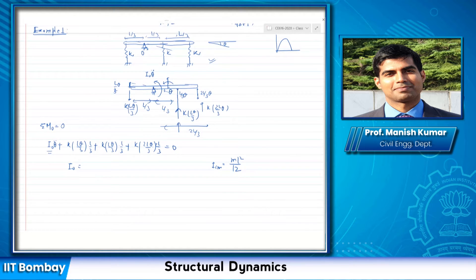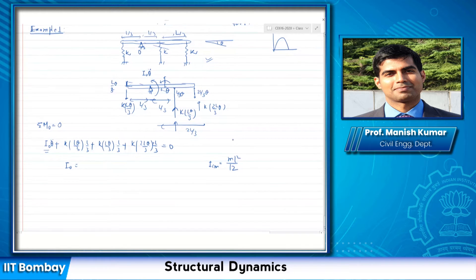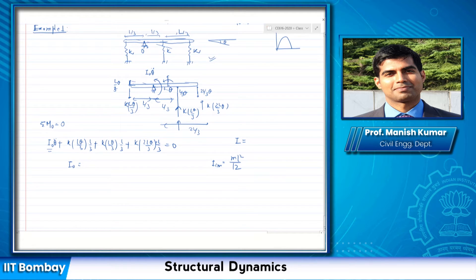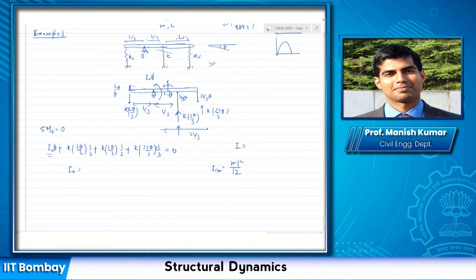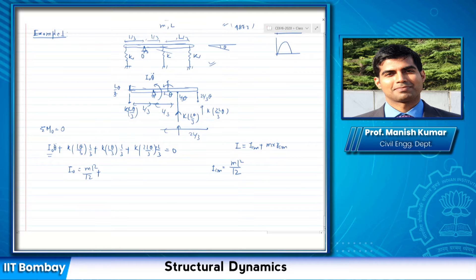Now I'm considering the moment of inertia about the point of rotation, so we use the parallel axis theorem. It states that the moment of inertia about an axis parallel to the center-of-mass axis equals I_cm plus the mass of the body times the distance squared from the center of mass to the point in consideration.